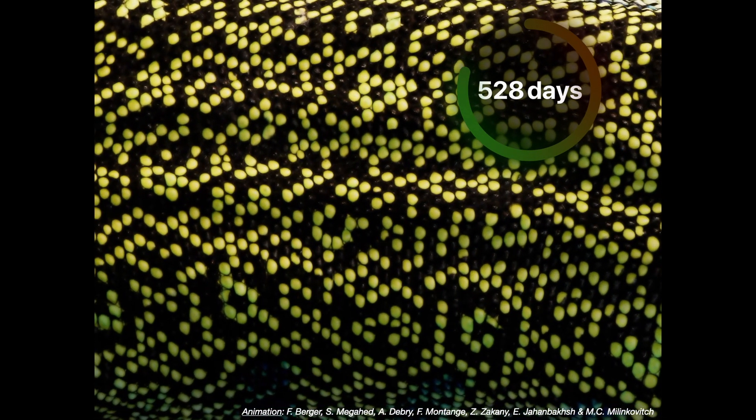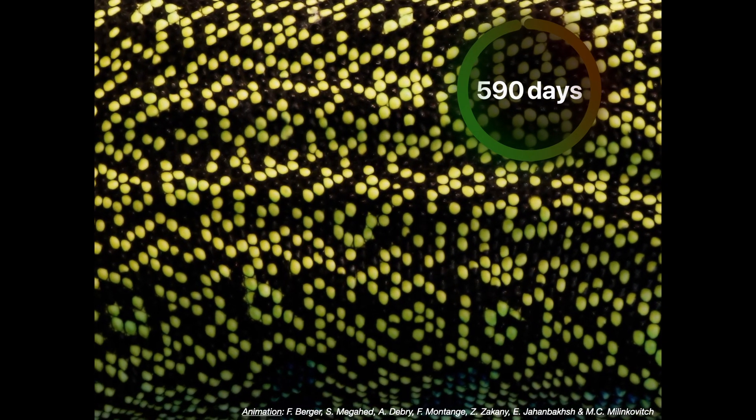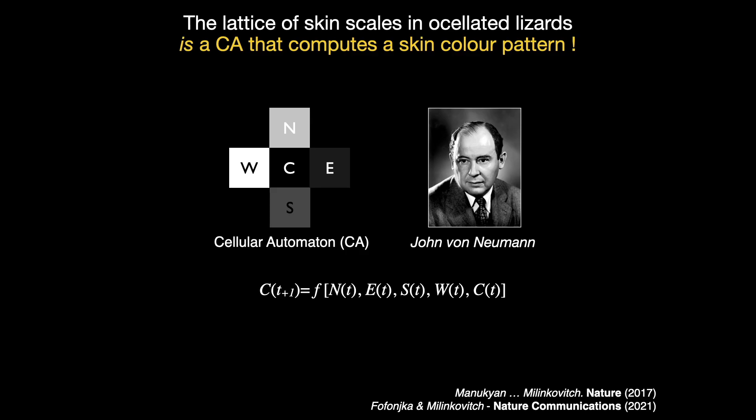We have previously shown that scale color flipping is not random, but obeys a Stochastic Cellular Automaton, or CA for short, a computational model invented in the 1940s by John von Neumann.